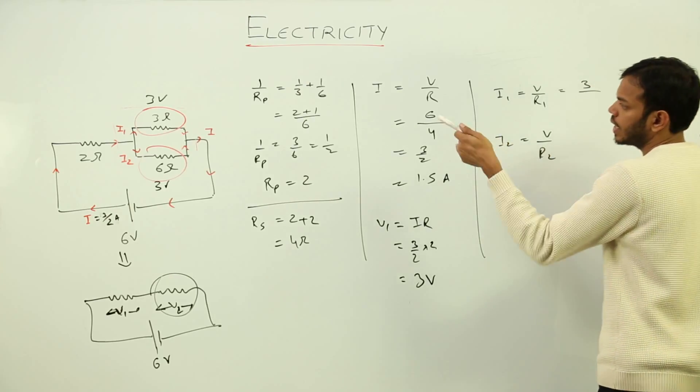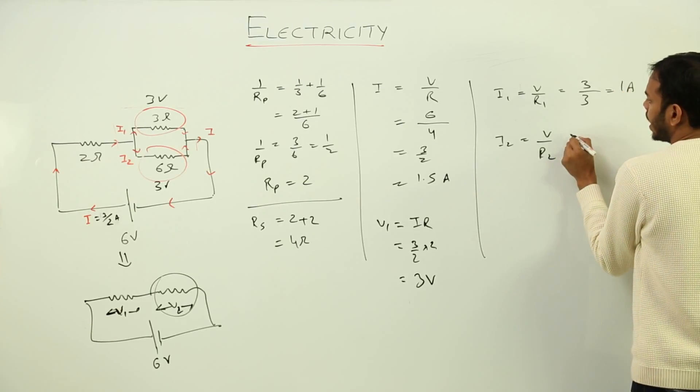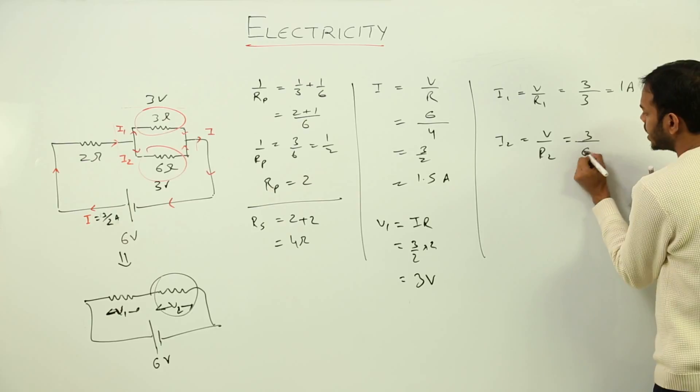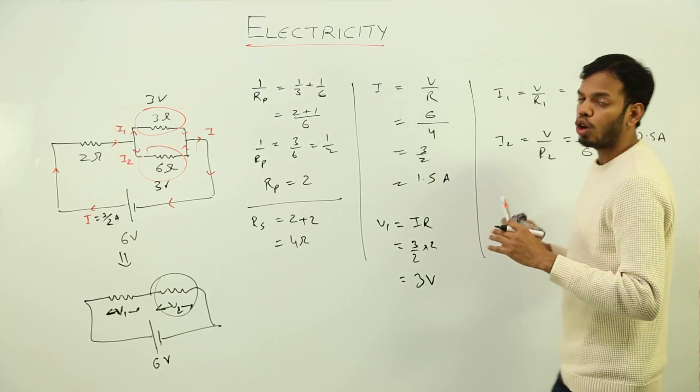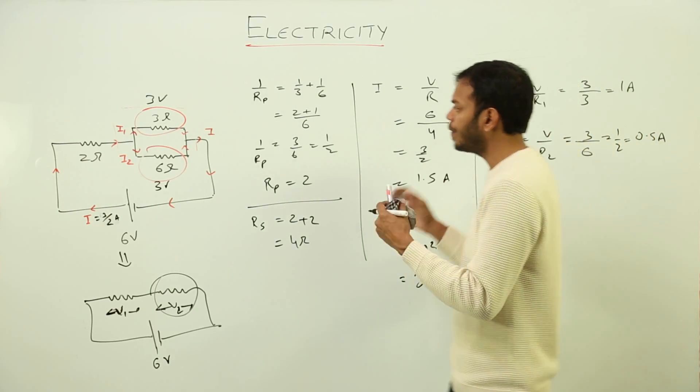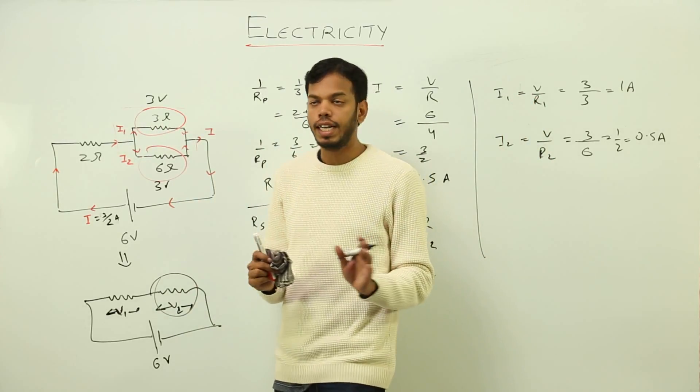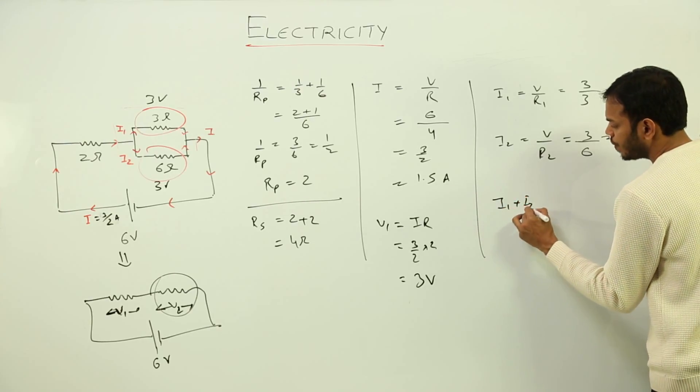I don't want to write the value of I2 but I want to explain another point. So first of all, let's calculate I1, which is V is 3, resistance R is also 3, I'll get 1 ampere. And here V is 3, R is 6, I'll get 3 by 6, which is 1 by 2 or 0.5 amperes. The point I want to explain is we have already done this formula.